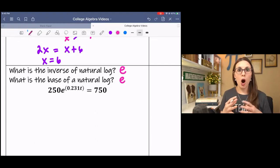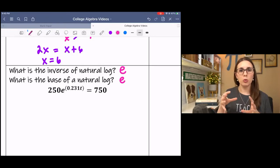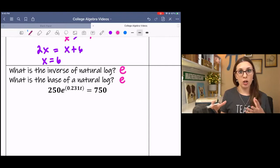So if we're trying to undo e, we would take the natural log. Or if we're trying to undo natural log, we would raise, we would do e raised to. So we're still using exponents, but instead of 10 and log, we're using e and natural log.